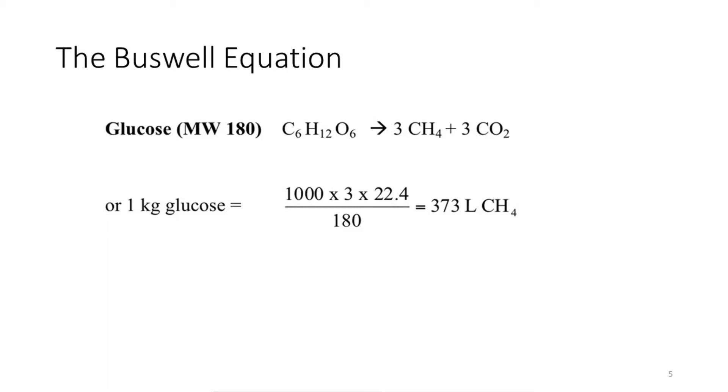This means that from a kilogram of glucose, a thousand grams, weighing 180 grams per mole, so I divide by 180 and I have the moles of glucose. Per mole of glucose I make three moles of methane, so times three. And under normal conditions the volume of a gas is 22.4 liter per mole. So this shows that from glucose I can make under normal conditions about 373 liters of methane.